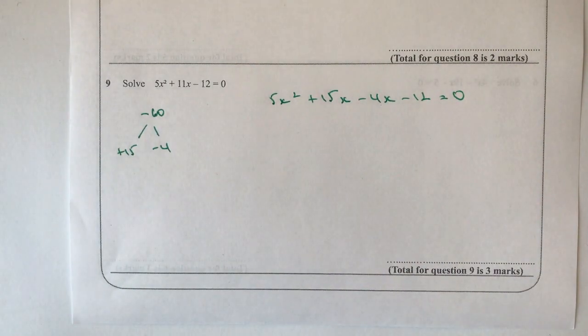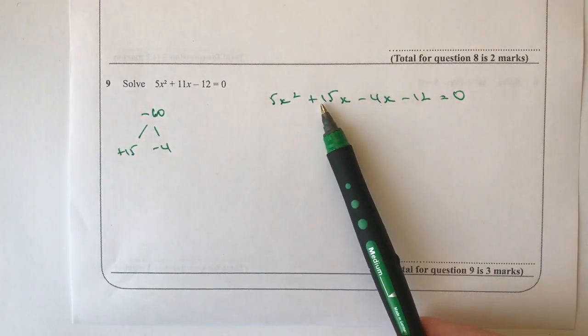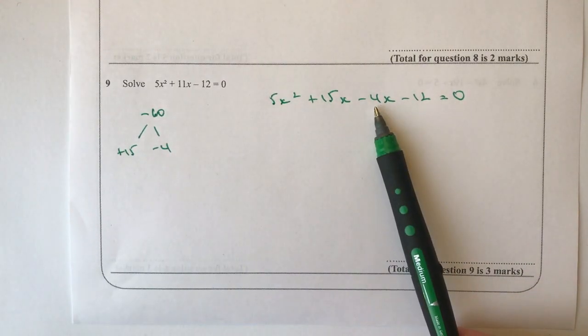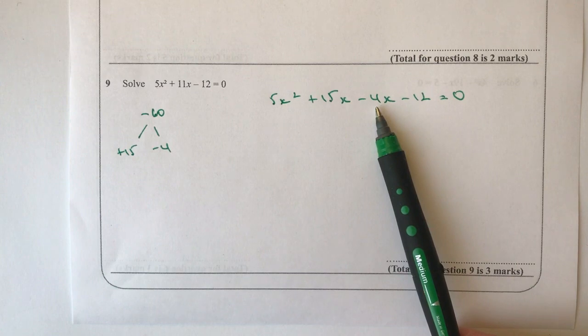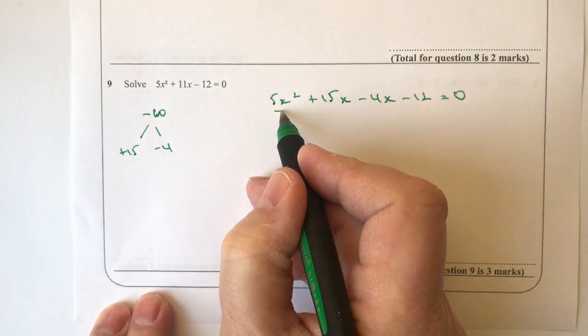So I haven't really changed anything. All I've done is I've said rather than writing 11x, plus 15x minus 4x is still going to give me 11x and nothing's really different except it does allow me now to factorize the first two terms.